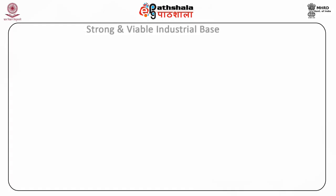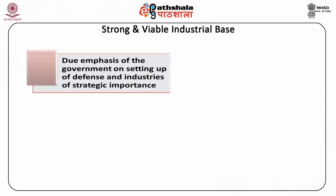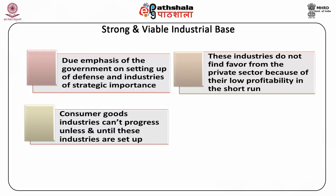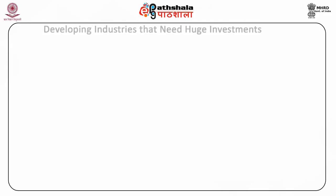Strong and viable industrial base: The industrial base of the economy had been strengthened because of the due emphasis of the government on setting up defence and industries of strategic importance such as iron, steel, heavy engineering, machine tools and equipment, etc. These industries do not find favour from the private sector because of their low profitability in the short run. Moreover, consumer goods industries cannot progress unless and until these industries are set up. All this put emphasis on the public sector to build a strong industrial base.